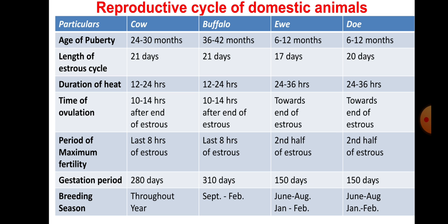Next is the reproductive cycle of domestic animals. You can see this chart with parameters: age of puberty, length of cycle, duration of heat, time of ovulation, maximum period of fertility, gestation period, and breeding season - for cow, buffalo, ewe (female sheep), and doe (female goat). Age of puberty: cow 24 to 30 months, buffalo 36 to 40 months, sheep and goat 6 to 12 months. Length of cycle: cow 21 days, buffalo 21 days, sheep 17 days, goat 20 days.